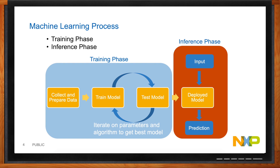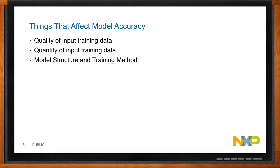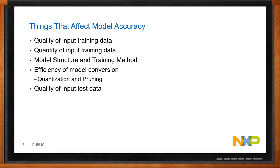Accuracy is critical with these models. Several things can affect it: the quality of the input training data — it should reflect real-life conditions and not be blurry; the quantity of data, since more data means more iterations and likely better accuracy; the model structure and training method; the efficiency of model conversion, since quantization and pruning to fit models on embedded systems can hurt accuracy; and the quality of the input test data — if a camera is out of focus, results will suffer.